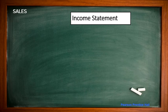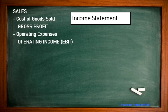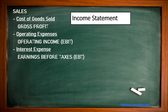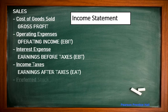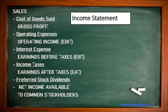Sales minus cost of goods sold equals gross profit. Reducing operating expenses from gross profit gives operating income, known as EBIT — Earnings Before Interest and Tax. After paying interest expenses to debt holders, we get earnings before taxes. After reducing income tax, we get earnings after tax. Then we pay preferred stock dividends, and whatever is left is net income available to common stockholders.